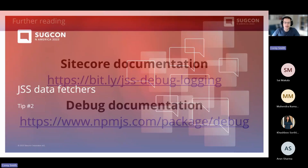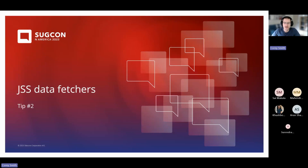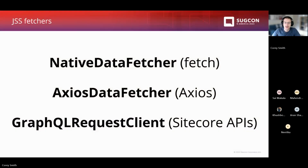Tip number two: JSS data fetchers. The Sitecore JSS library exports three data fetchers you can use in your application for making API calls. The three available are: the native data fetcher, which is a wrapper around fetch; the Axios data fetcher, which is a wrapper around Axios; and the GraphQL request client, which is built for making GraphQL calls to the Sitecore APIs.